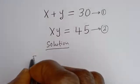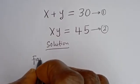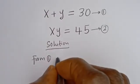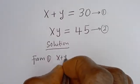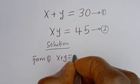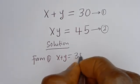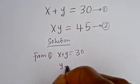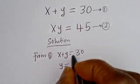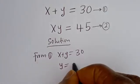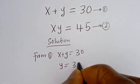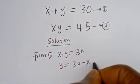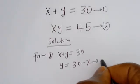Then from equation 1, x plus y is equal to 30, so y is equal to 30 minus x. Let's call this equation 3.